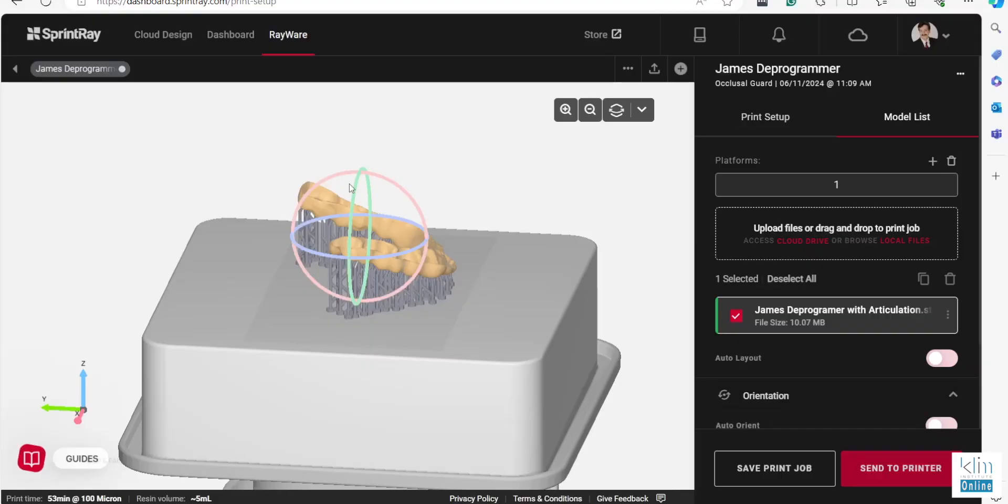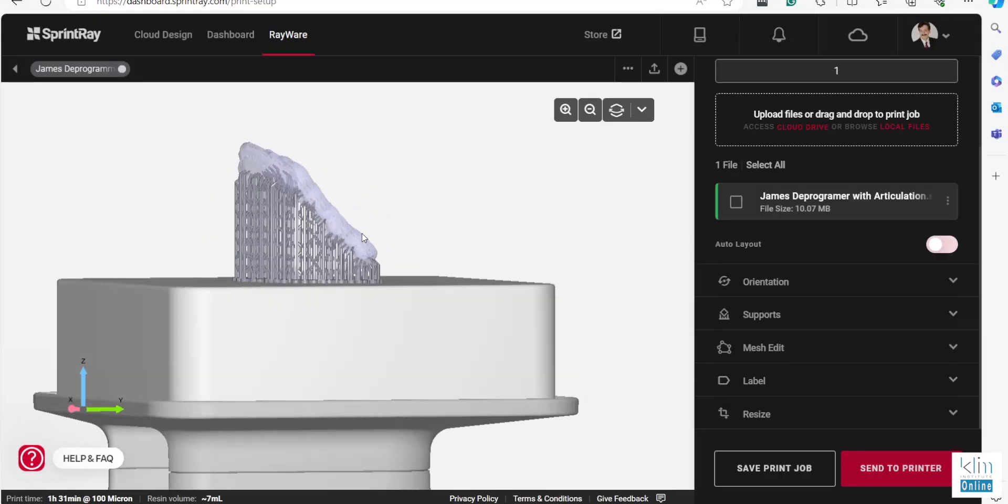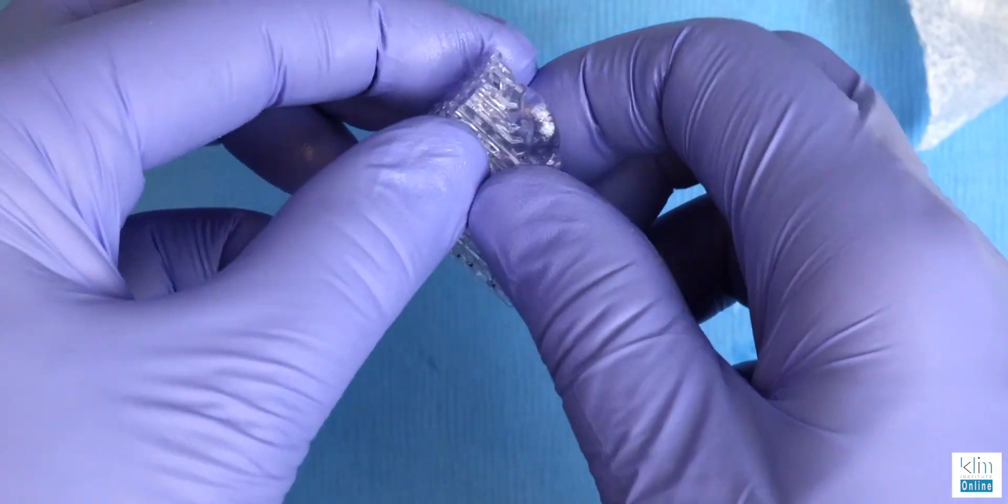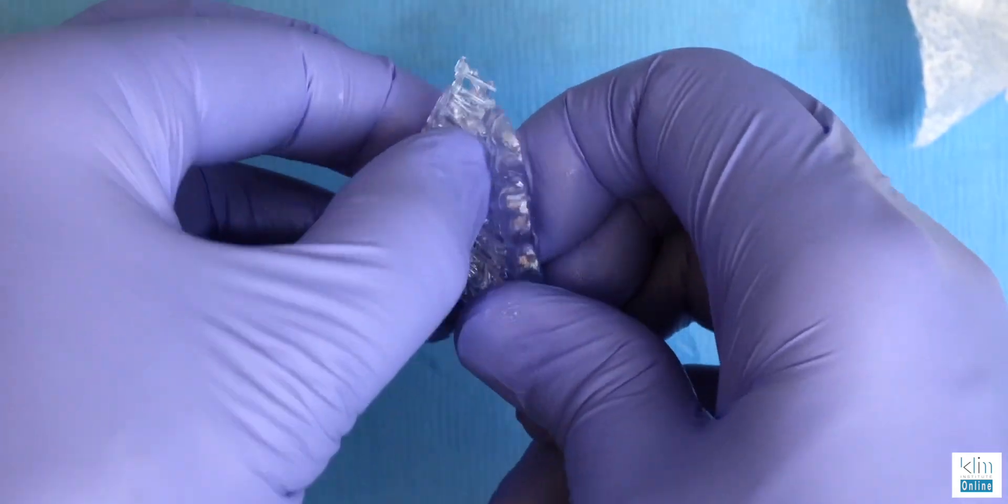Just a few comments about setting it up in the Sprint Ray software. You do have a downloadable software, but I find that at the time of this video, the supports are just a little robust and they're hard to remove. I like the Sprint Ray Cloud and their software online. We do position the splint at an angle so the supports are not on that bite platform. And with the online software at this time, it's really easy to remove those supports. Just with your finger, they pop right off. They're smaller and they're easier to clean up.